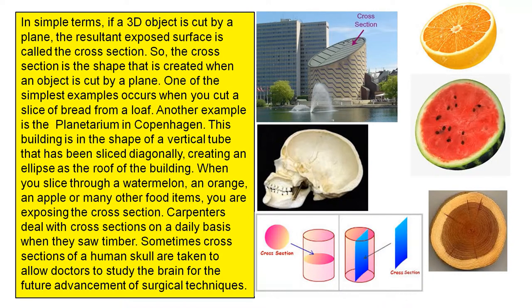Another example is the planetarium in Copenhagen. This building is in the shape of a vertical tube that has been sliced diagonally.